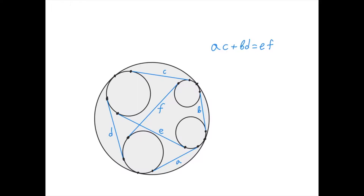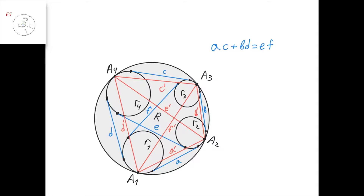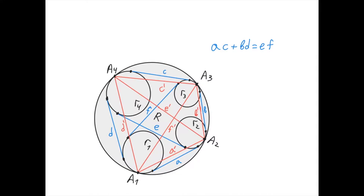We're not going to prove the reverse statement of Casey's theorem because the proof is very hard and beyond the scope of this course, but we're going to prove the forward version: if we know that the four circles are tangent to the large circle, then AC plus BD equals EF. Let's call the points of tangency of the four small circles with the larger circle A1, A2, A3, and A4, and the radii of the four circles R1, R2, R3, and R4, and the radius of the large circle big R. Let's construct the quadrilateral A1, A2, A3, A4, and label its sides A', B', C', D', and its diagonals E' and F'.